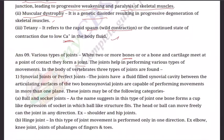Synovial joints may be of the following categories. First: ball and socket joints — one bone forms a cup-like depression or socket in which a ball-like structure fits. The ball can move freely in any direction, allowing 360-degree rotation. Examples include the shoulder joint and hip joint.